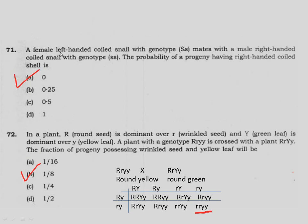Question 71: A female left-handed coiled snail with genotype SS mates with a male right-handed coiled snail with genotype ss. The probability of progeny having right-handed coiled shell is determined by the mother's genotype. Since the female is left-handed with genotype SS, the coiling of the offspring is determined after fertilization by the mother's genotype. In this case, the probability of right-handed coiling is 0. Option A.